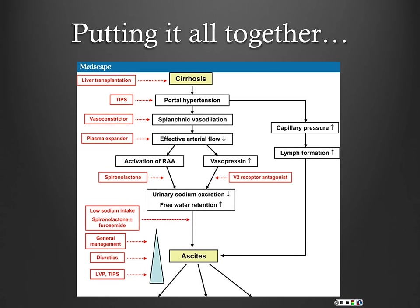Going back to the pathophysiology graph, we can map where our interventions work. The general things we're doing: low sodium intake, diuretic therapy — particularly spironolactone — to affect RAS system activation. When we do paracentesis, we always use a plasma expander, preferentially albumin. Vasoconstrictor therapy like midodrine has been shown to be effective as well.